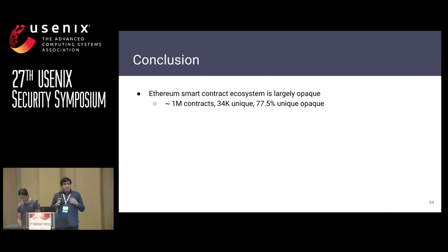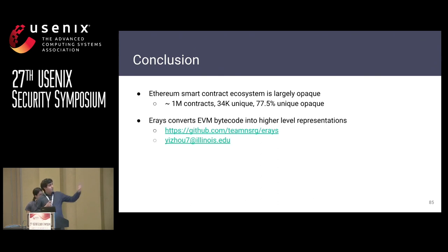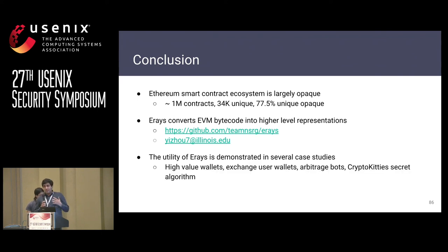In conclusion, the Ethereum ecosystem is largely opaque — 77.5% of unique contracts are opaque. The code is available and you can contact us for more information. We've seen how the opacity assumption can be completely broken through our case studies: the high-value wallets, the user exchange wallets, the arbitrage bots, and the CryptoKitties gene algorithm. Thank you.